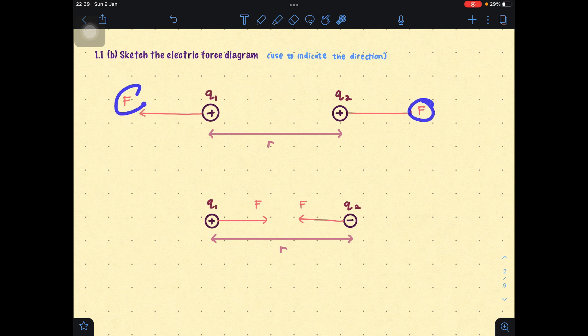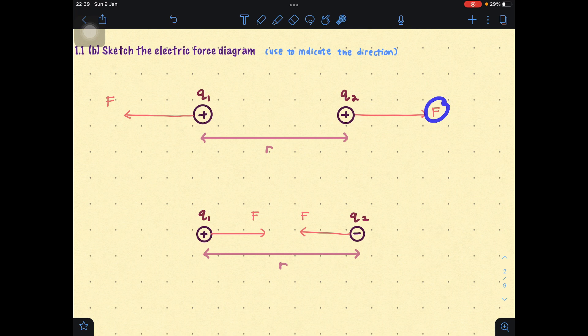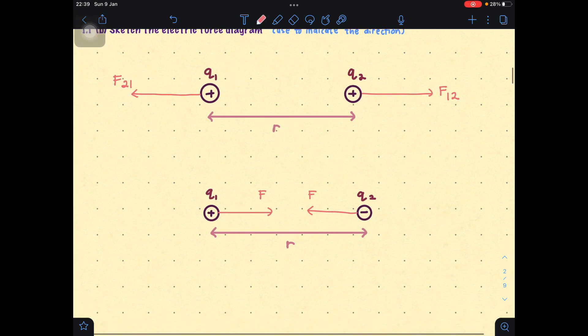And remember, the force here is the same value. Force here is the same value as here, but direction will be different. Here, we will use numbering to label the force. The force here is the force on 2, the force that is exerted on Q₂ by Q₁. So Q₁ exerts force on Q₂. So we will put 1, 2. And then here will be 2, 1, the force exerted by 2 on 1. Same also here. This one will be force by 1 on 2, and force by 2 on 1.